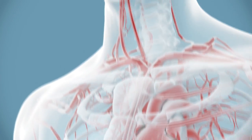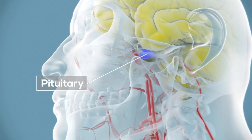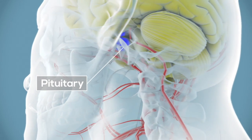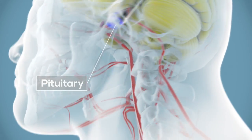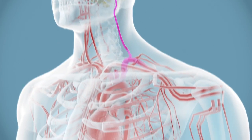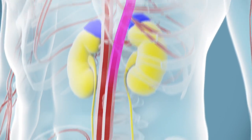Testosterone production is regulated by the pituitary gland, the master gland, which sits at the base of the brain. The pituitary gland releases a hormone called luteinizing hormone, LH, which travels via the bloodstream to the testes.